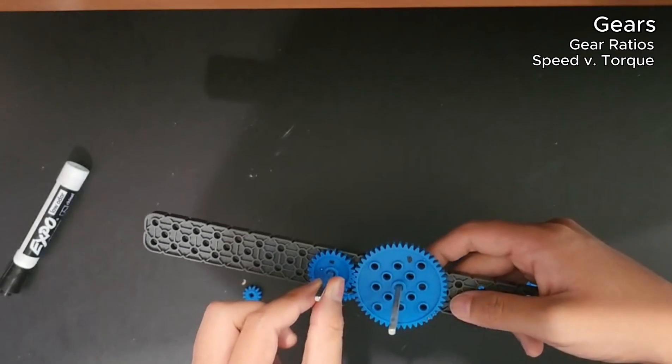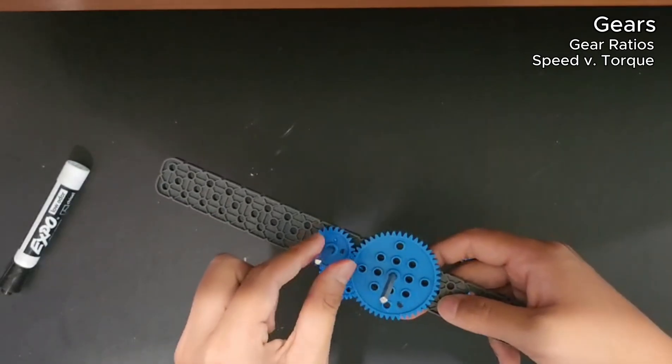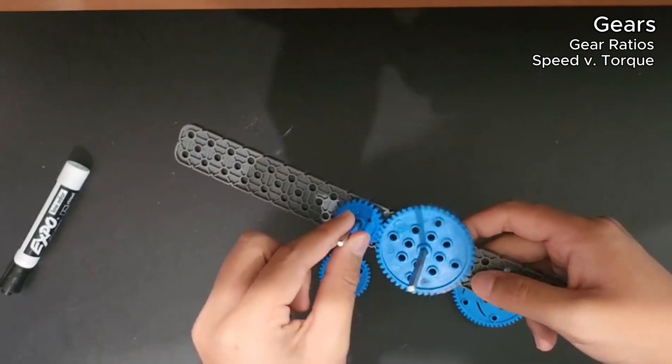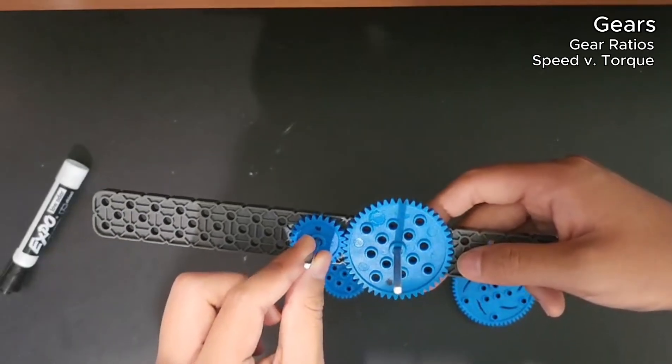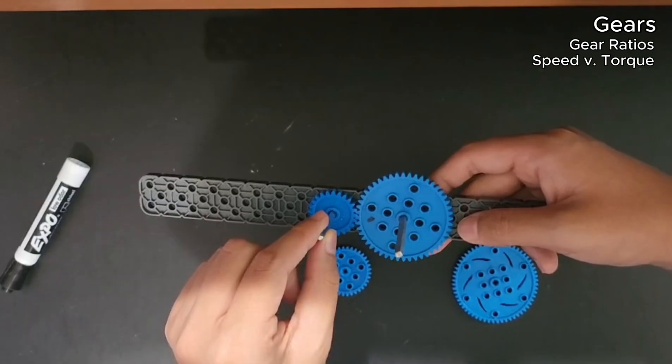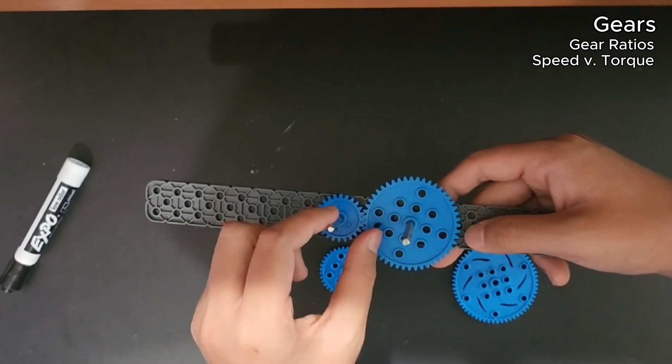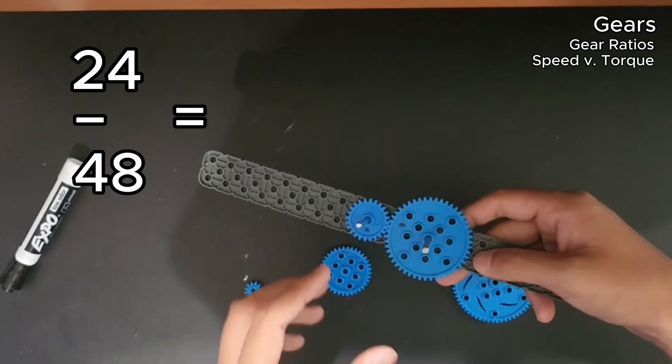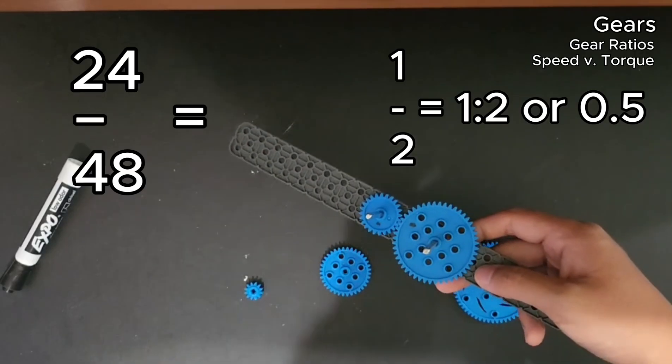Okay, so now I'm spinning the smaller gear and you can see that half a rotation of this gear, the 48 tooth gear, will only spin a quarter. So right here, I have this at the very top. I spin it half and it's only went one quarter of the way. This is because 24 to 48 simplifies to a one to two ratio, making it slower.